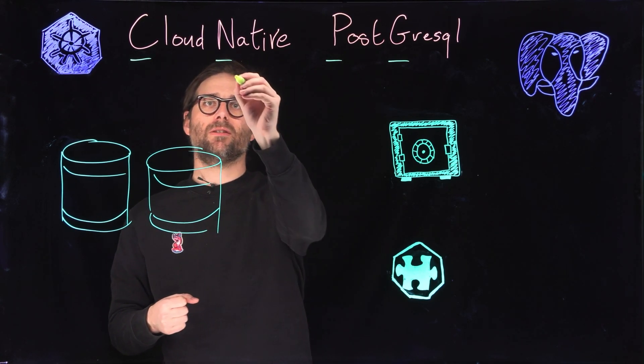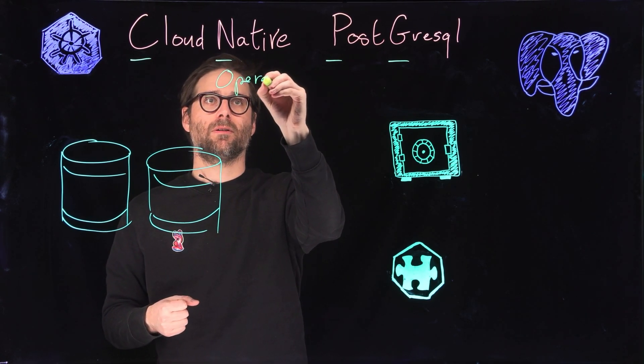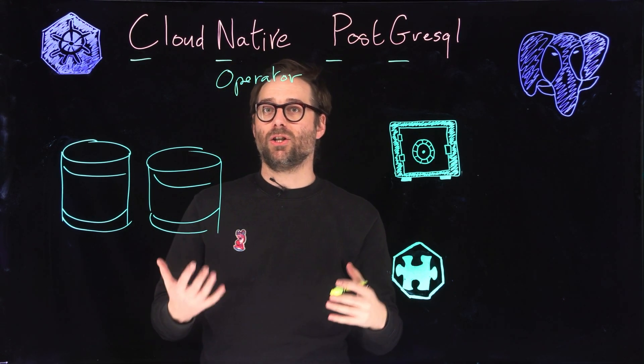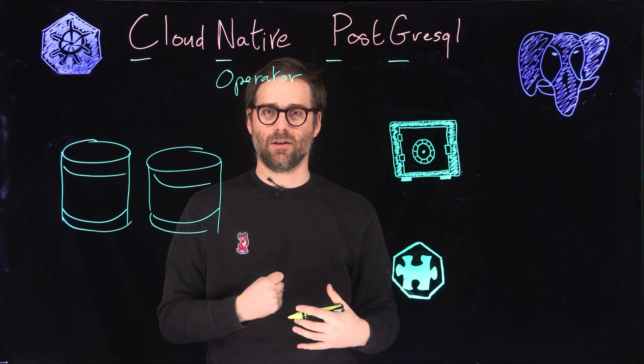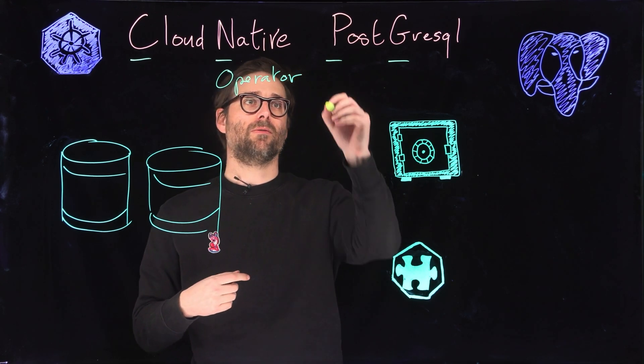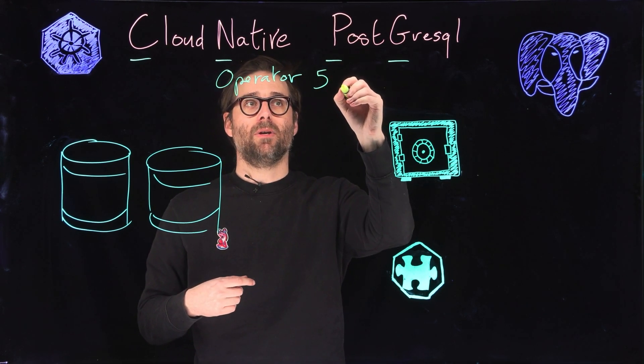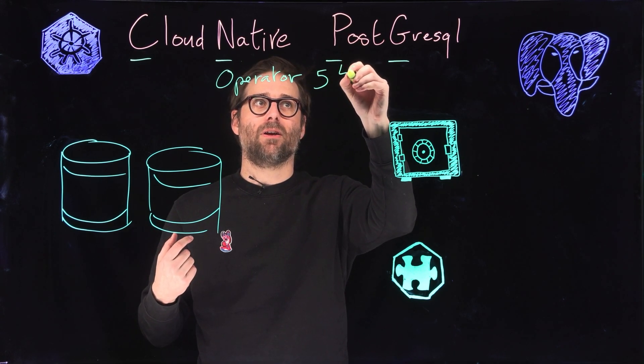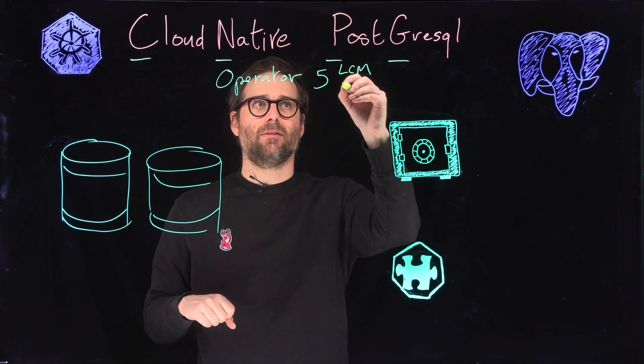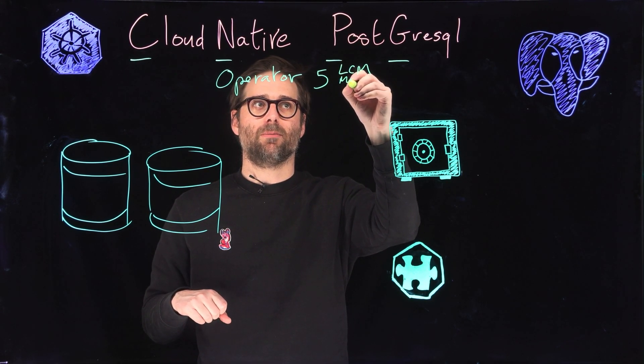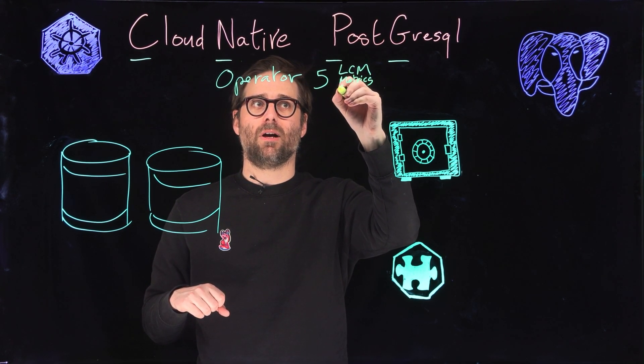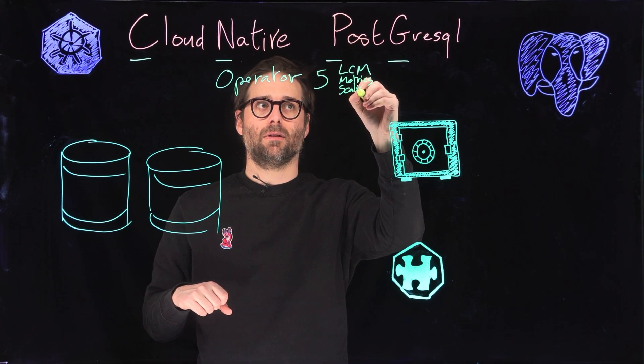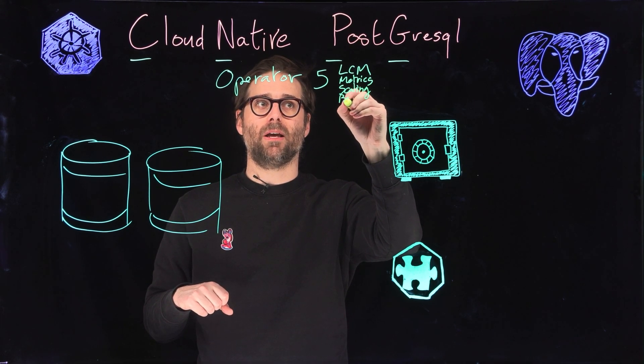CNPG is a Kubernetes operator that helps you to manage many aspects of your PostgreSQL even if you are not a diehard PostgreSQL administrator. This is a level 5 operator, meaning that it will deal with lifecycle management of your database, give you metrics and observability, help with scaling your app, making backup and more.